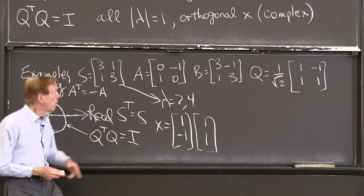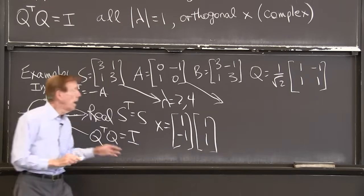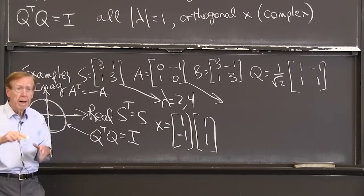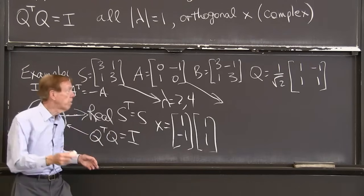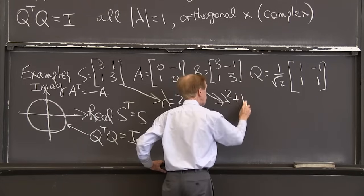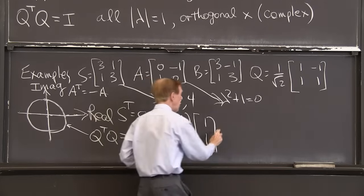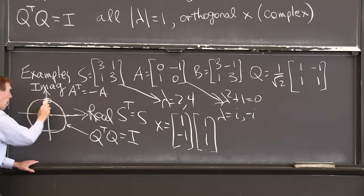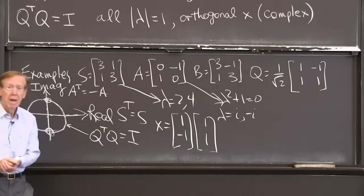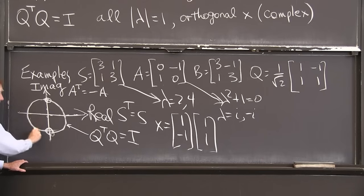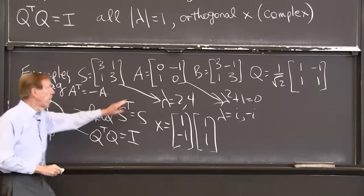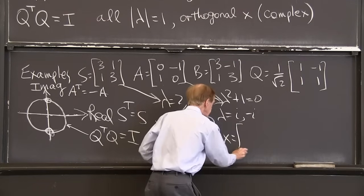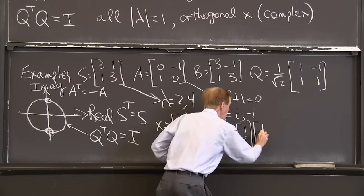What about A? Antisymmetric. The equation when I do determinant of lambda minus A, I get lambda squared plus 1 equals 0 for this one. So that gives me lambda is i and minus i, as promised, on the imaginary axis. And I guess that that matrix is also an orthogonal matrix. And those eigenvalues i and minus i are also on the circle. So that A is also a Q.